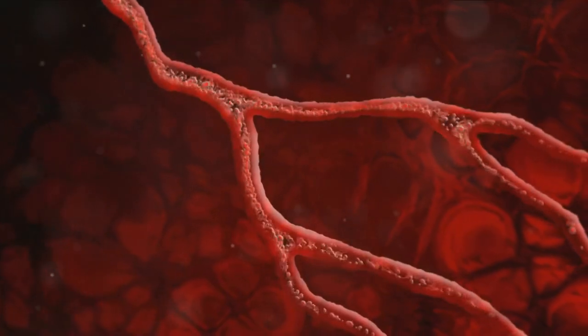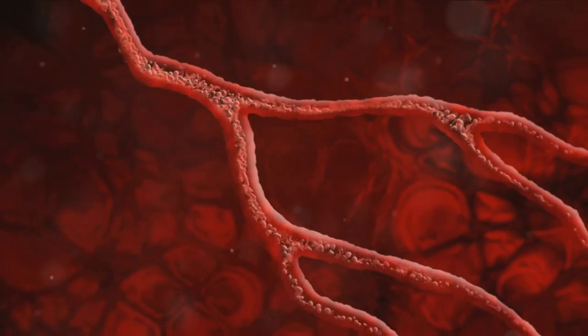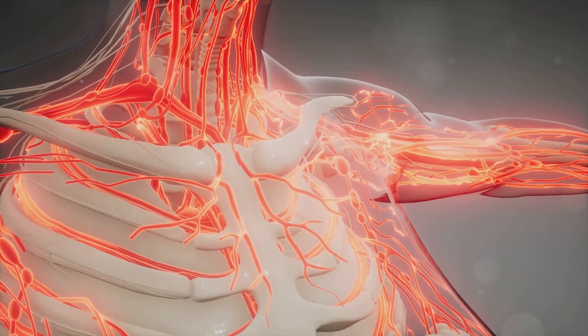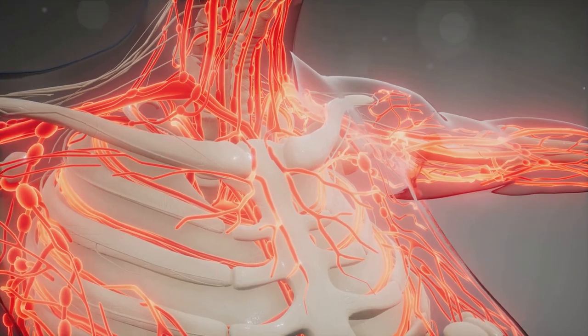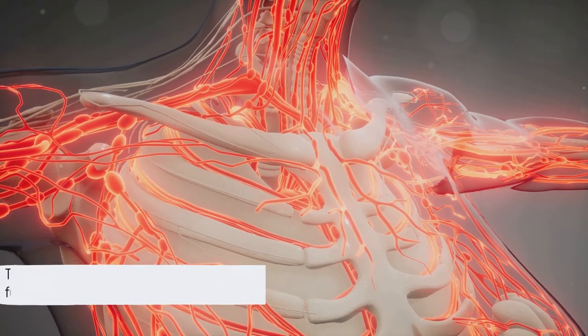Now let's meet the arteries and veins, our body's super transport system. Arteries, like superheroes, carry fresh, oxygen-rich blood from the heart to the rest of the body. Veins, on the other hand, return the used, oxygen-poor blood back to the heart. Isn't it amazing how our body has its very own highway for blood?